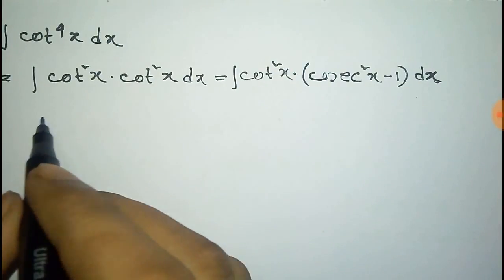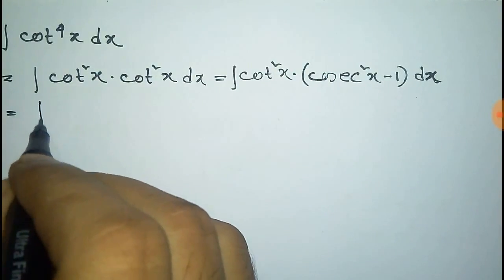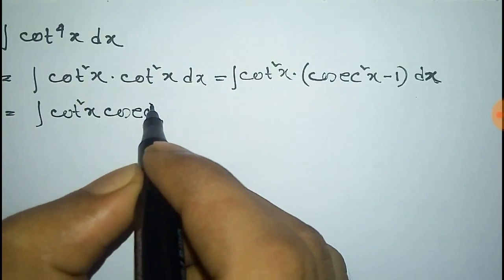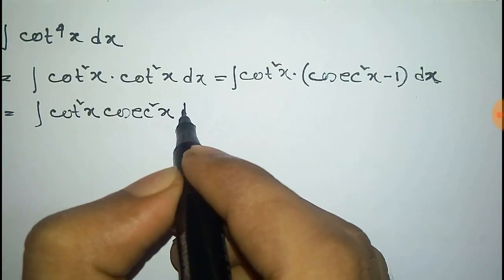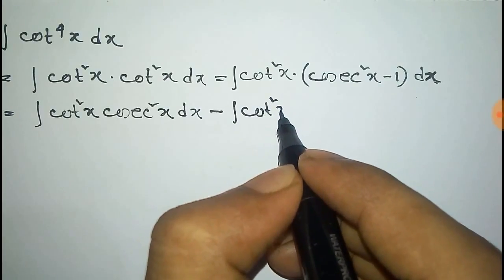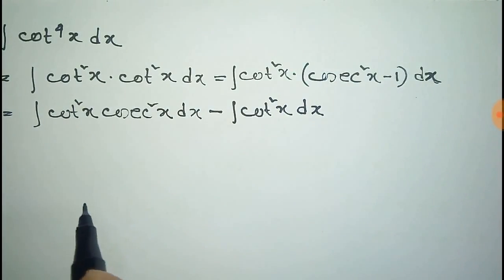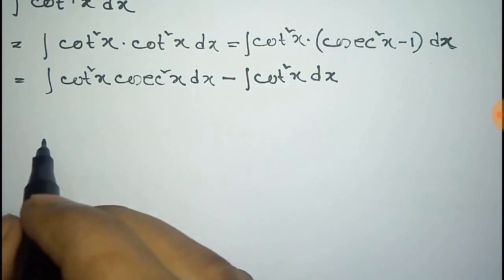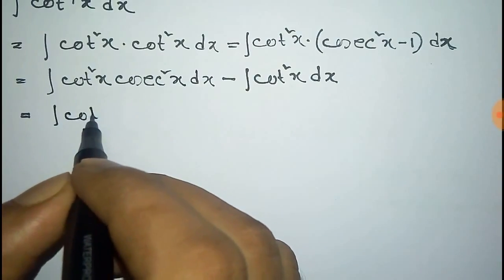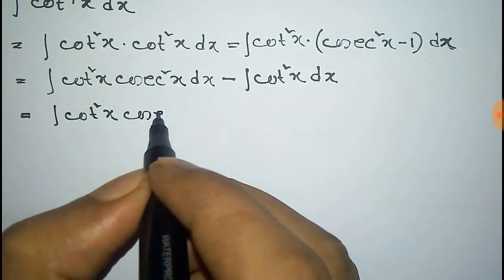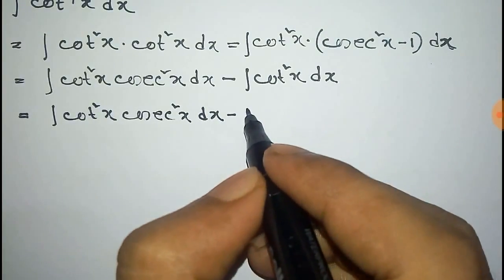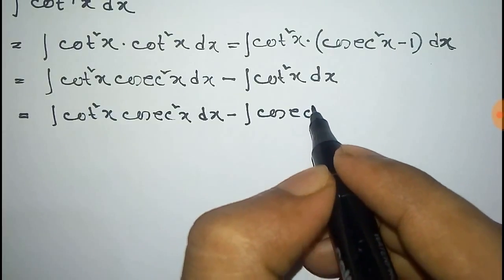Now this is equal to cot square x into cosec square x dx minus integration of cot square x dx. Now write this cot square x as cosec square x minus 1.